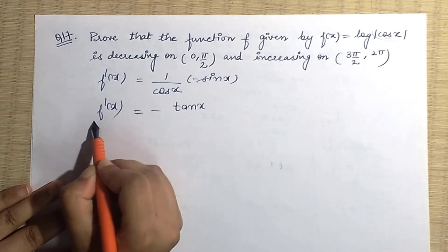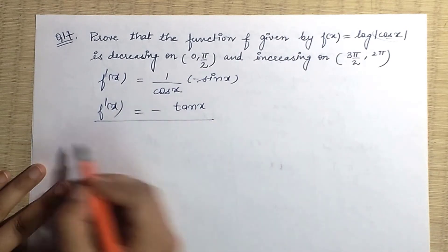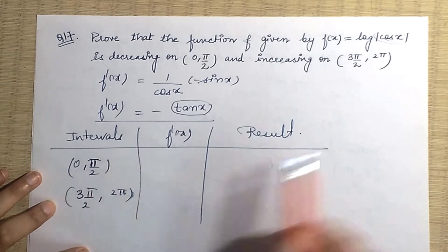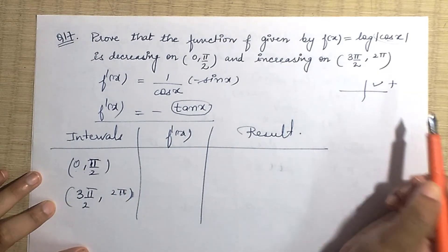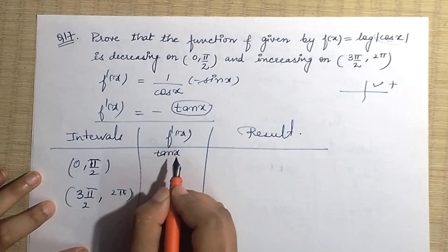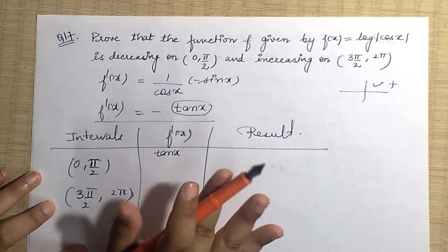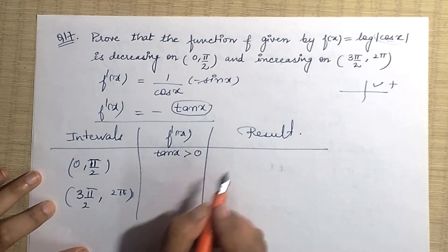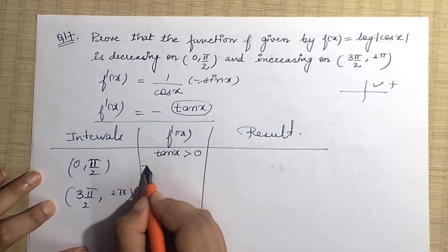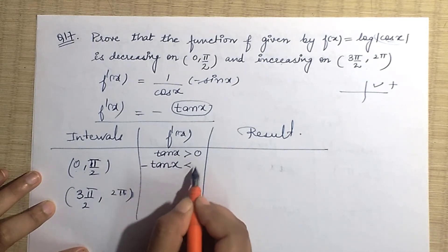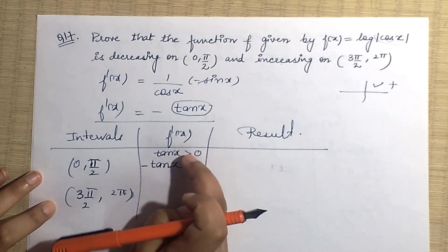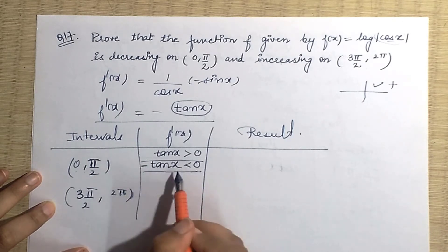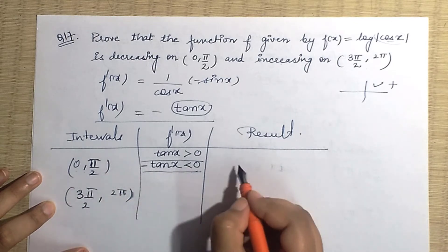That means f'(x) = -tan x. Now for the interval (0, π/2): in the first quadrant, tan x is positive — greater than zero. But f'(x) is -tan x, so when we multiply by minus, the inequality flips from greater than to less than. So f'(x) < 0 in this interval, which means the function is decreasing here.